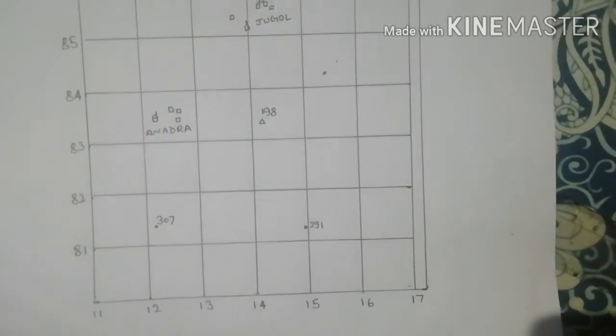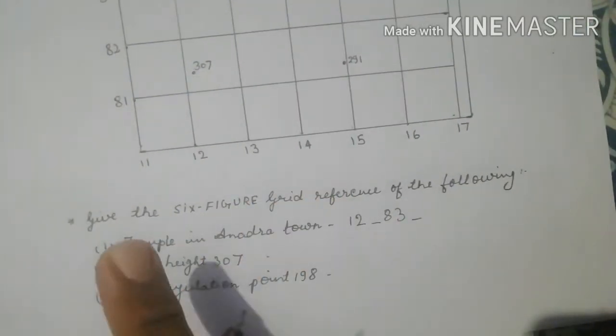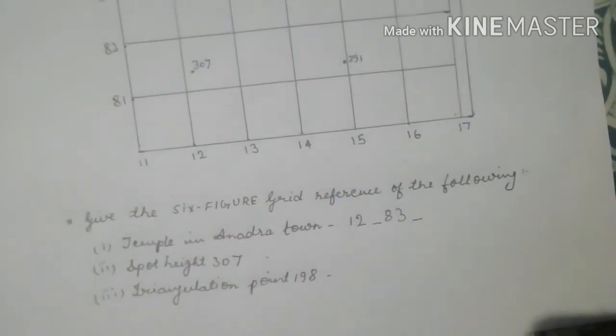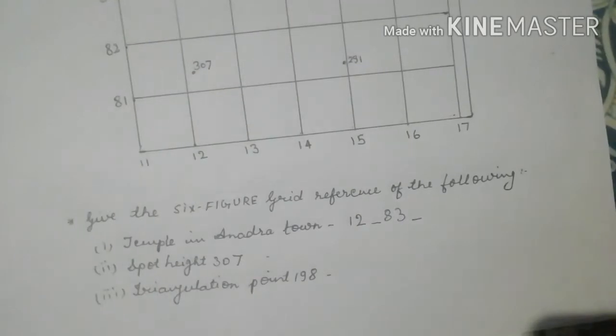I have written certain questions. Give the six-figure grid reference of the following: first is temple in Anandha town, then spot height 307, then triangulation point 198.